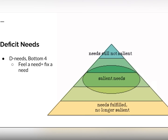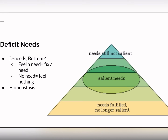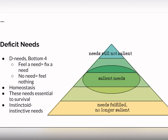These needs are deficit needs, or D-needs, and they're the bottom four needs on the pyramid. With these needs, if you feel a need, you fix the need. And if there's no need, you feel nothing — or homeostasis, which means everything in your body or your life is equal, balanced, and nothing needs to be fixed. These needs are essential for survival; your body has adapted to have them, which is why they're called instinctoid or instinctive needs.